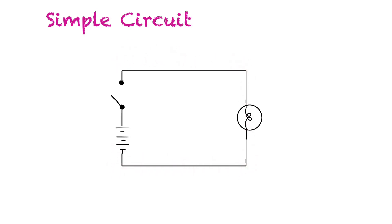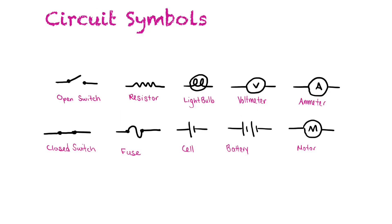There are a few points here. These are the conducting wires — a straight line represents the wire in the circuit. This here is a switch, and this switch is open because it has a break in the circuit, so electricity is not flowing through the circuit right now. Over here is a light bulb — this is the symbol for a light bulb. And over here is a battery.